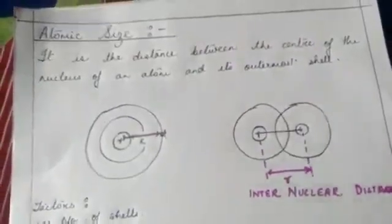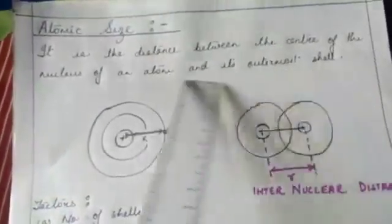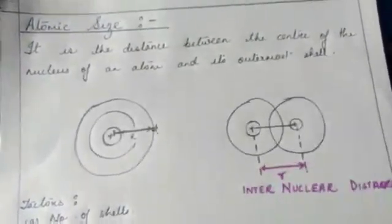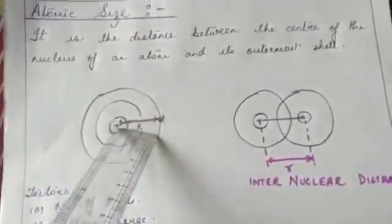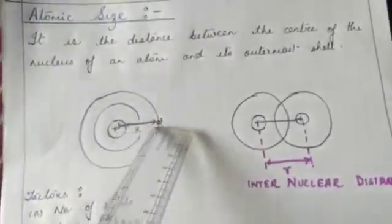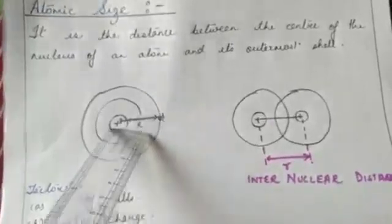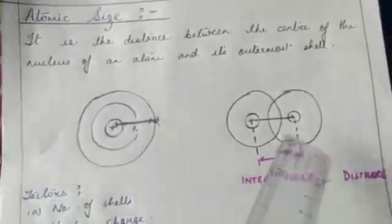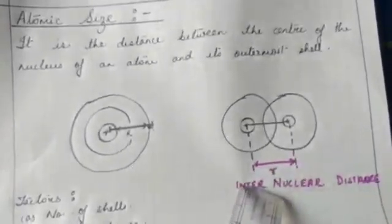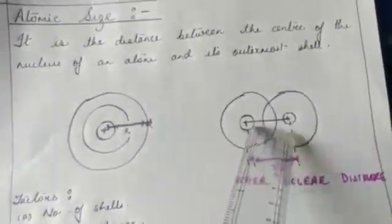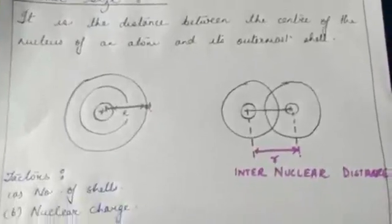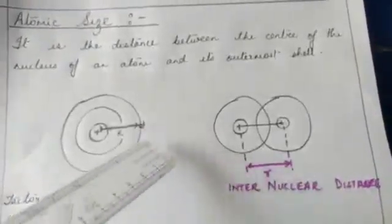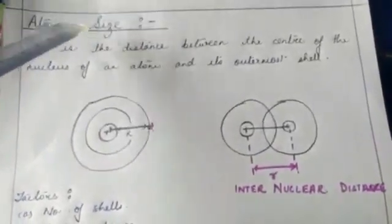Let us begin with the first periodic property: atomic size. Atomic size is the distance between the center of the nucleus of an atom and its outermost shell. In the diagram, one shows an individual atom where the distance from the center of the nucleus to the last orbit is called atomic radii. When considering a molecule, the distance between the two nuclei is considered the inter-nuclear distance.